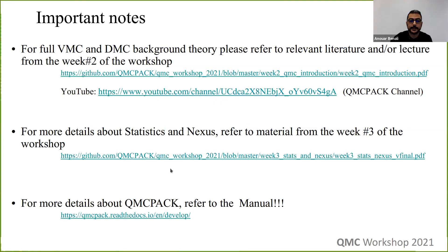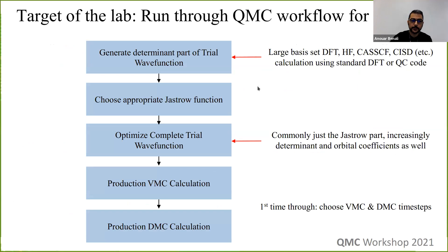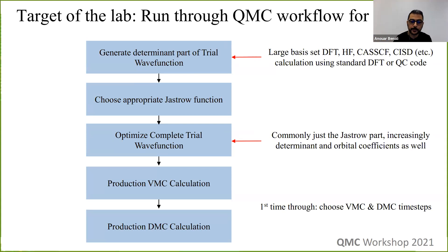During this lecture I will try to go through a QMC workflow. We're going to start by seeing how we can generate a trial wave function — just the determinant part. Then we're going to build it by adding the Jastrow function, showing how we add Jastrows, what they are, and how we optimize them. Then how we optimize the trial wave function, focusing on a single determinant, optimizing Jastrow parameters, and finally variational Monte Carlo parameters such as time steps, populations, and how to reduce error bars.